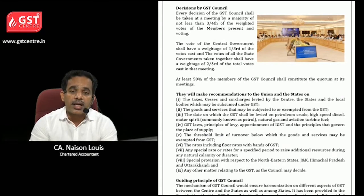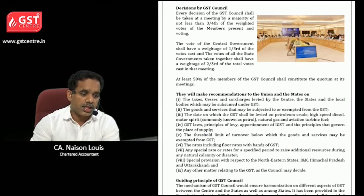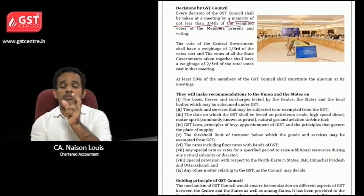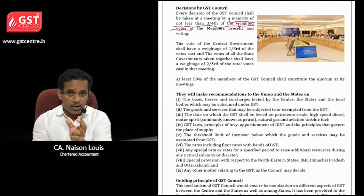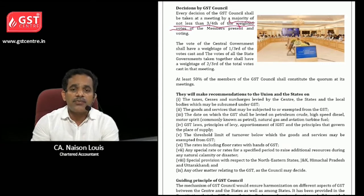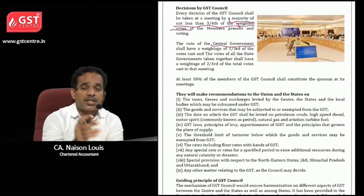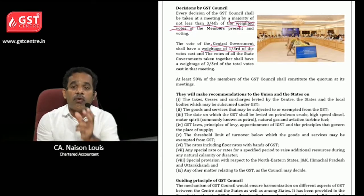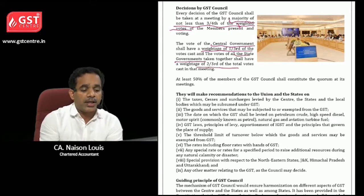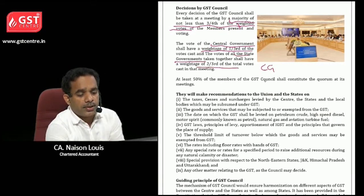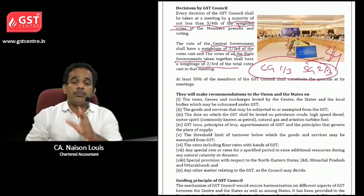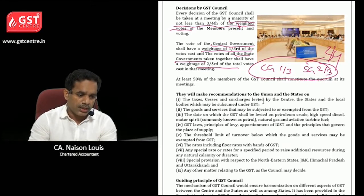There is a special criteria for taking decisions in the GST Council. Every decision shall be taken at a meeting by a majority of not less than three-fourths of the weighted votes of the members present and voting. The central government holds a weightage of one-third, and all state governments together hold two-thirds. This is called weighted votes, and three-fourths of those must be obtained for passing any decision.